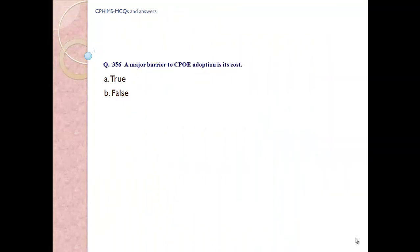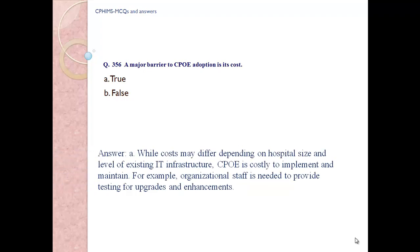Question number 356. A major barrier to CPOE adoption is its cost. A) True. B) False. Answer A. True. While cost may differ depending on hospital size and level of existing IT infrastructure, CPOE is costly to implement and maintain. For example, organizational staff is needed to provide testing for upgrades and enhancements.